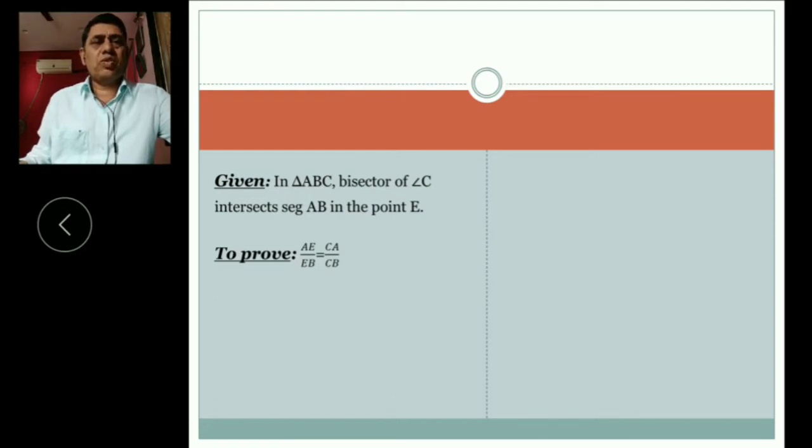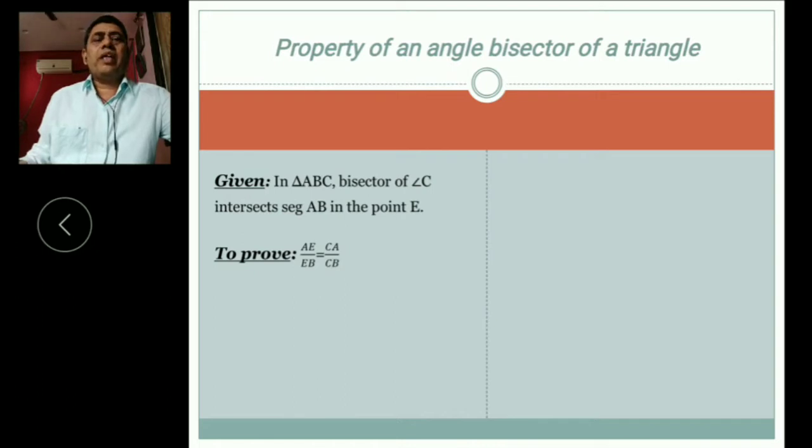This is a conversive pile. Now let us start a new topic, that is property of an angle bisector of a triangle.